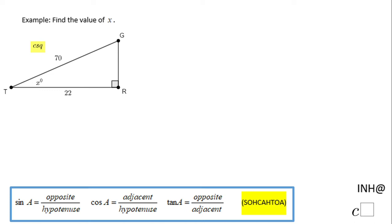Welcome back to I Need Help at C Square. In this example, we need to find the value of x. X is the measure of angle t, and if you notice we know this adjacent leg.